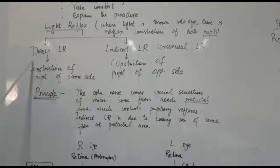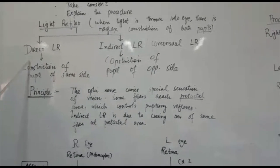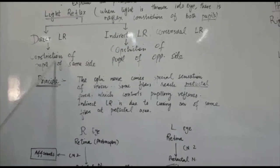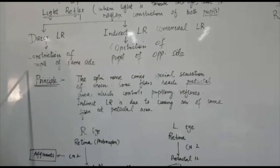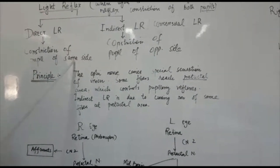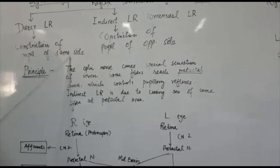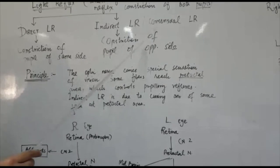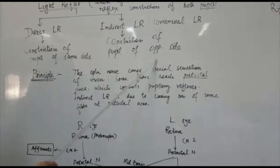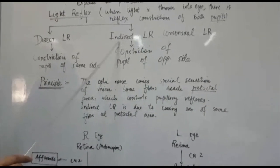Now how will you explain what is direct light reflex? On throwing the light into the eye, the constriction of pupil of the same side is called direct light reflex. Whereas when you study the constriction of pupil on the opposite side, it is called indirect light reflex.